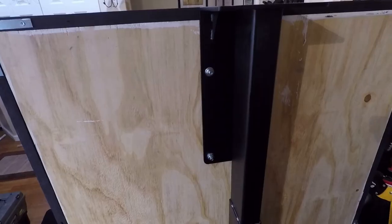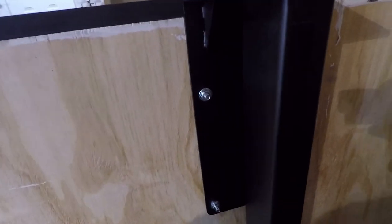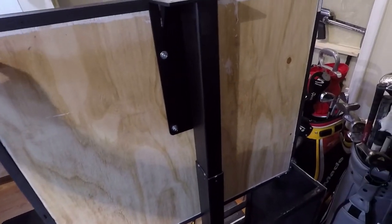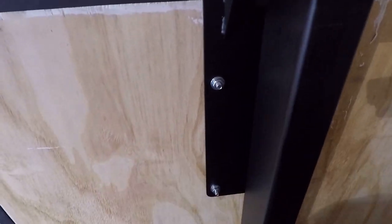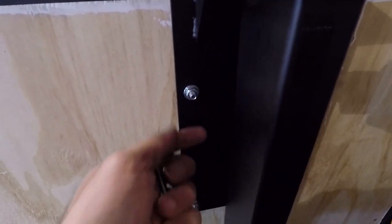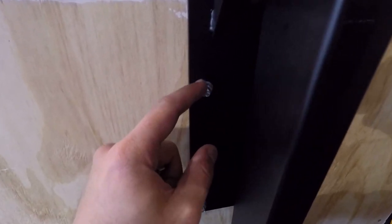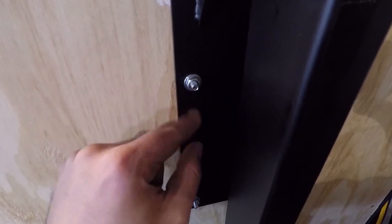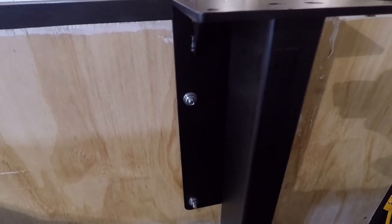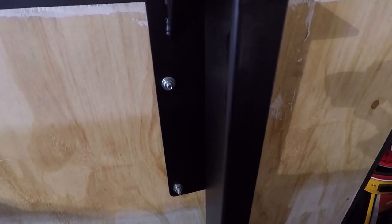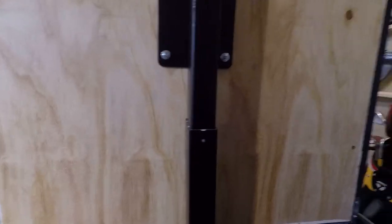We have bolted our cabinet here to our piece and we used quarter inch bolts here, washers on either side. This is pretty sturdy here. The only thing that's moving is the actual arm itself, but you can see here that it functions as it should.